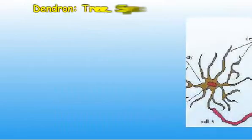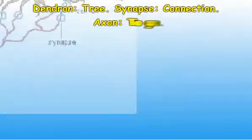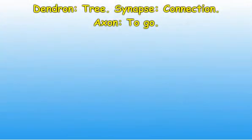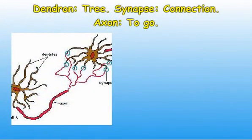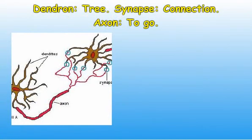There are about 100 billion nerve cells in the brain. Dendrites are fibers which receive information from other neurons. The dendrites are tree-shaped. 'Dendron' means tree in ancient Greek. Dendrites have protuberances on their surface called dendritic spines, rather like leaves on a tree.